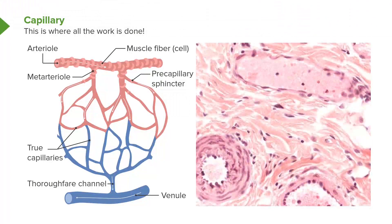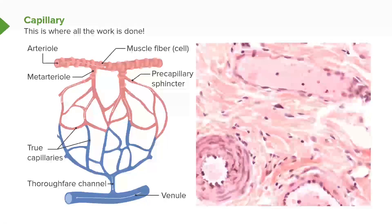Look at the thin wall. And up top on the section, you can see a structure with a large lumen, a very, very thin wall. That's probably going to be a post-capillary venule or even a small venule. It's very hard to know. But just get an idea of the relative thickness of the walls of these vessels.